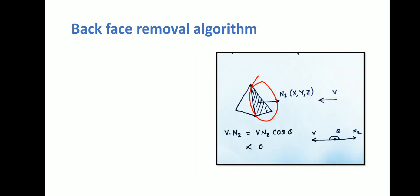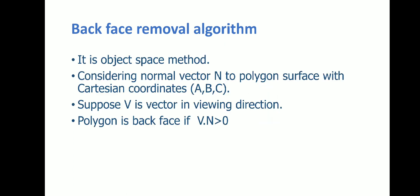In the second case, consider a polygon having normal vector N2 with x, y, z coordinates and a viewing direction V. The angle between V and N2 will be greater than 90 degrees. The dot product V·N2 equals |V||N2|cos(θ), and since cos(θ) is negative from 90 to 180 degrees, this calculation will be less than 0. Therefore we say this face is a front face. To summarize: a polygon is a backface if V·N is greater than 0, and a polygon is a front face if V·N is less than 0.